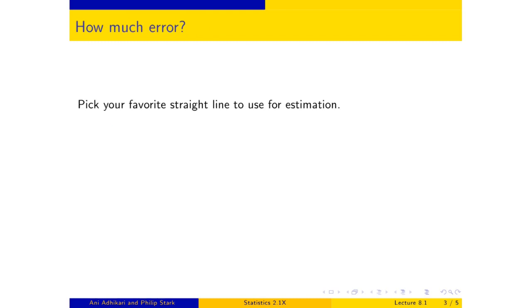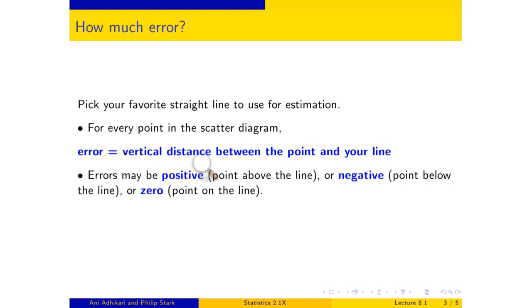You pick the line you like best to use for estimation and put it through the scatter diagram. Then for every point in the scatter diagram, your line makes an error, and that is the vertical distance between the point and the line. Some of these errors are positive, some are negative, and some are zero. If you've got a list of positive and negative numbers, errors typically, and you want to know roughly how big those errors are, then what do you do?